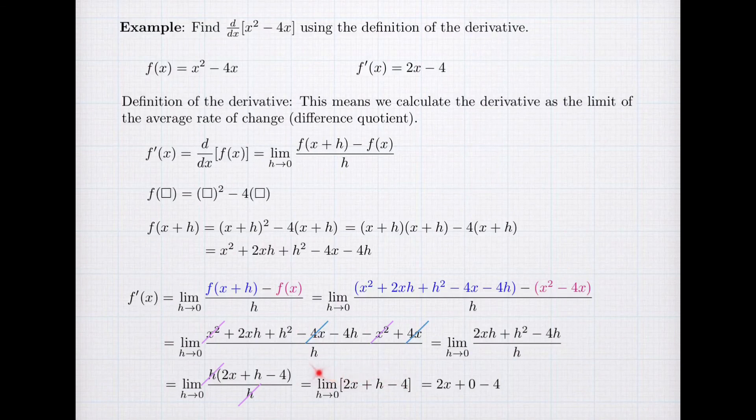At the step before, the 2x plus h minus 4, that's the input to the limit. And 2x plus zero minus 4, that's the output to the limit. And so what have I found? I found that f'(x) equals 2x minus 4. And that's what we were wanting to show from the very beginning.